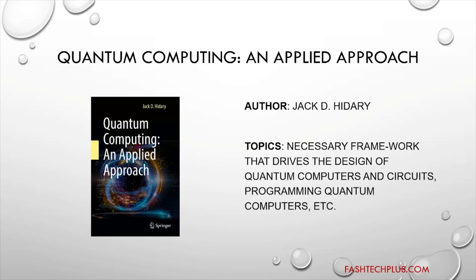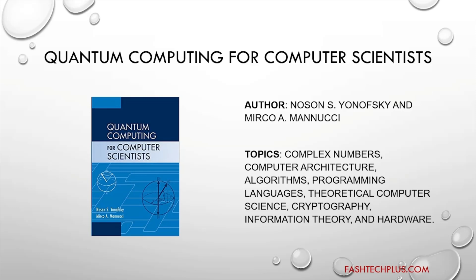The fourth book is 'Quantum Computing: An Applied Approach.' The author says that we are currently lacking efficient and errorless quantum technological systems. The book is divided into three parts: the first part covers the necessary framework that drives the design of quantum computers and circuits; the second part is for those readers who wish to dive into the programming that makes this new machine work; and in the last part, it provides a set of critical tools to use in the journey to master quantum computing.